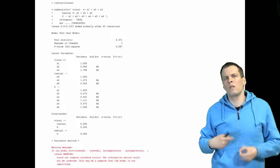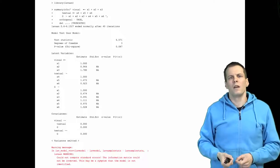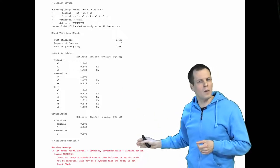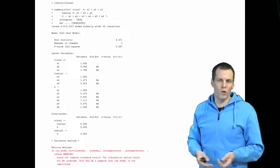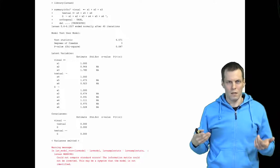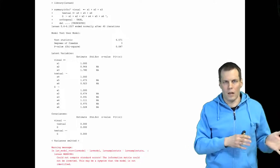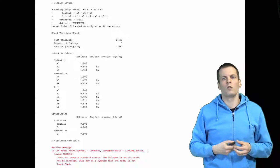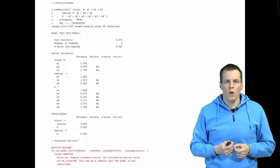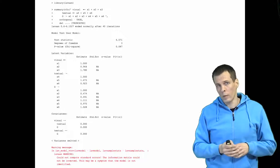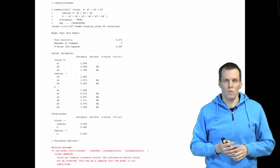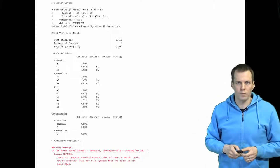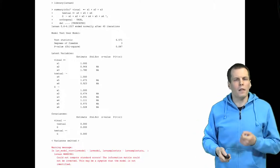So what do you do if you want to estimate this kind of model but don't get standard errors and get a warning? You have to first understand the identification problem I just explained, then make informed decisions on whether to fix some of the loadings or try adding more variables to the model, which is not always possible.